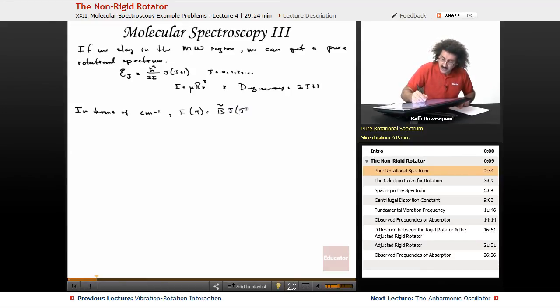Where B tilde is Planck's constant divided by 8π²cI.